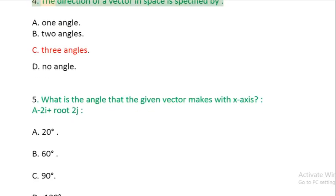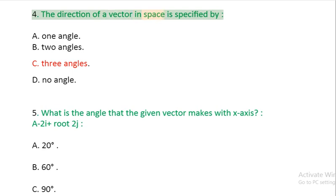Question 4: The direction of a vector in space is specified by: A: one angle. B: two angles. C: three angles. D: no angle.